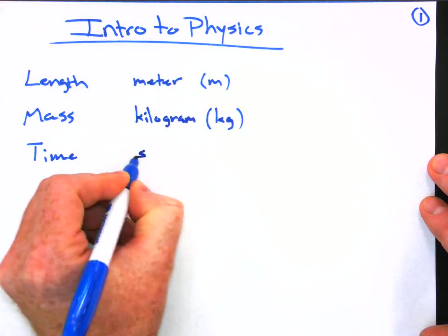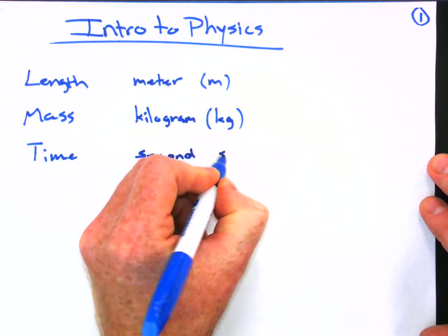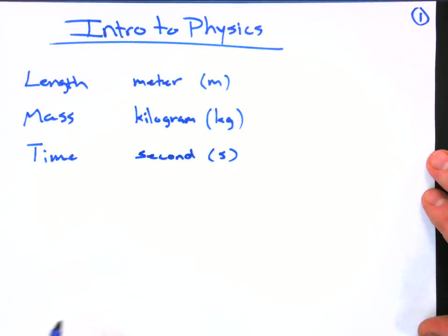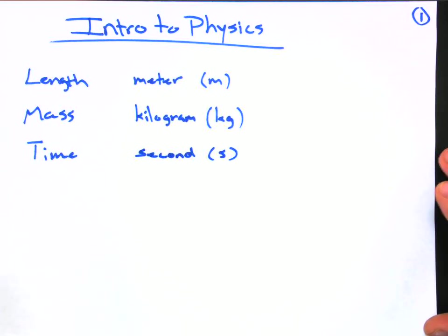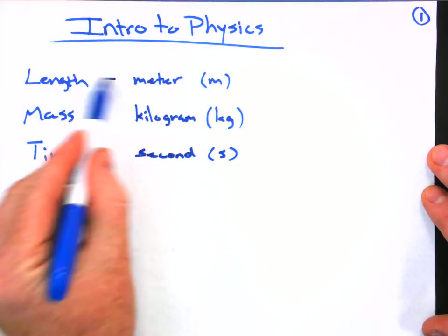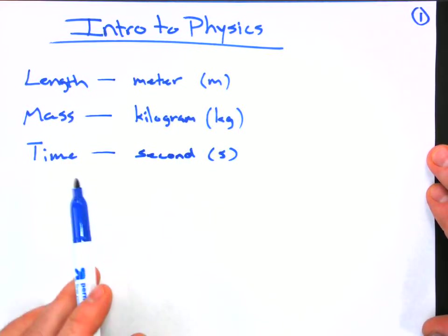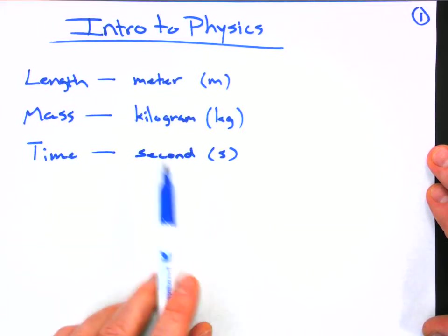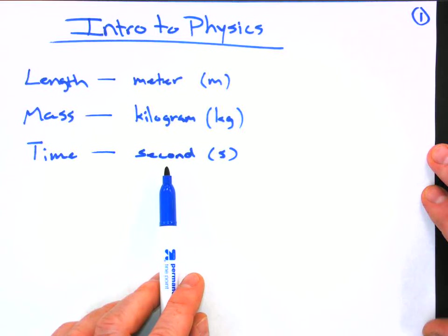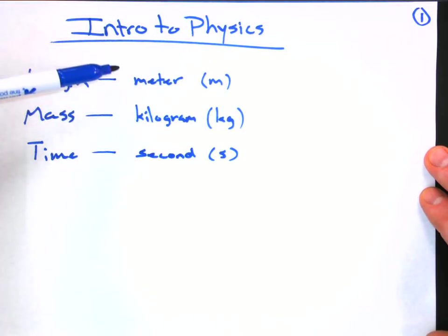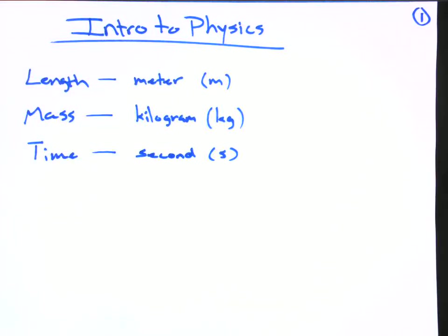And also for time, we have seconds, just a lowercase s. What you have to do is think to yourself when you're analyzing a situation or solving a problem, do you have information in these basic units for these quantities? Or is it in some other unit? Is it not meters but kilometers? Is it not seconds but hours or days? Sometimes you won't have to change the values to the basic units, but if you're unsure, then please change those values to be measured in the basic units. You're going to be really secure in knowing that you're going to get the right answer.